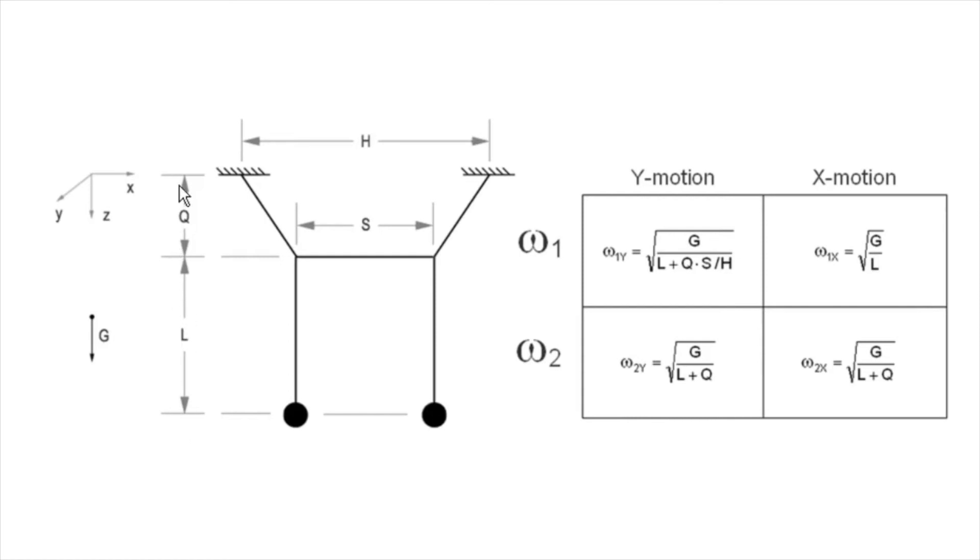The omega-1 for x-motion is the natural frequency of a simple pendulum of length l. And the omega-1 for y-motion is the natural frequency of a simple pendulum having a length somewhere between l and l plus q. As the span s approaches its lower limit of zero, the omega-1 of y approaches the omega-1 of x. And as s approaches its upper limit of h, omega-2 y approaches the omega-2 of x.